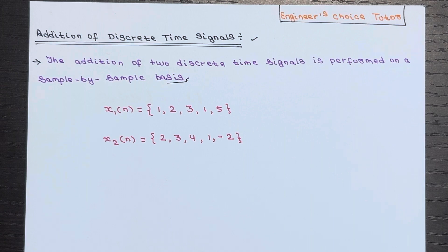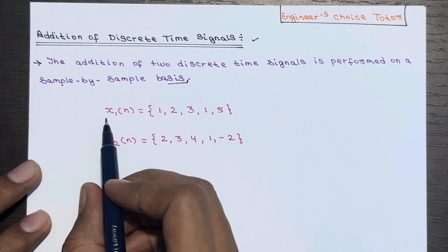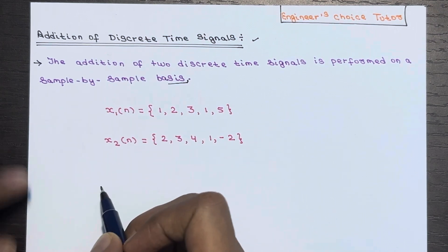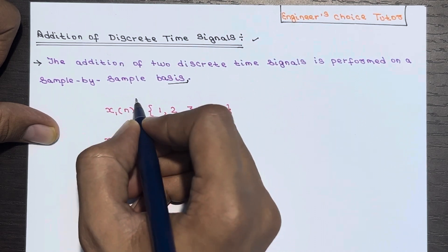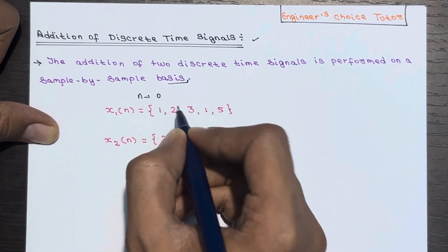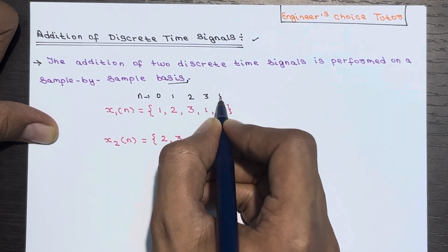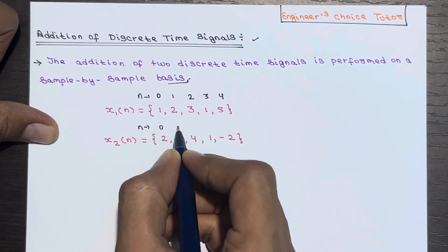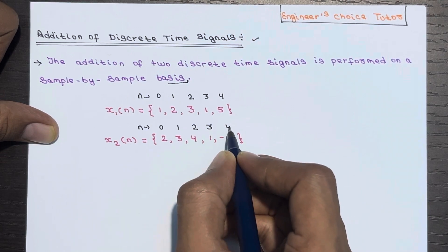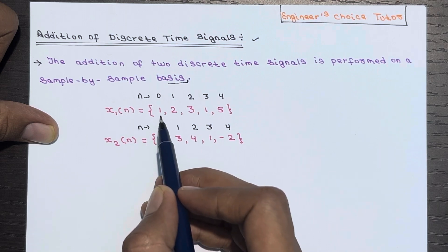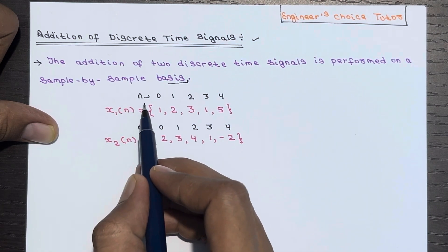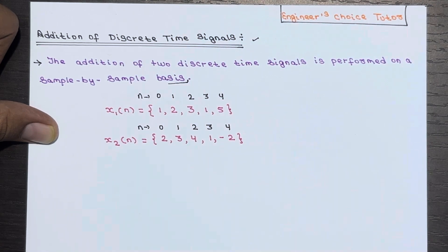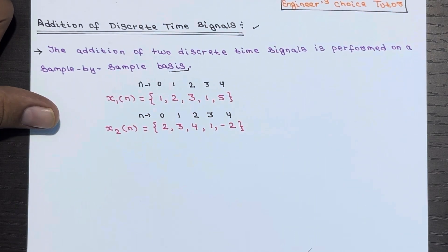To help us understand this concept better, let's look at an example. I have two signals: x1(n) and x2(n). This is the sequence representation of the signals. The value of n goes 0, 1, 2, 3, and 4 for both signals. At n equal to 0, the value of x1(n) is 1. At n equal to 1, the value of x1(n) is 2. This makes it easy to understand the addition of discrete time signals.